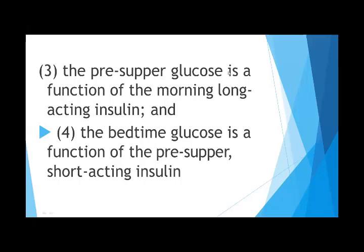Pre-supper glucose is a function of the morning long-acting insulin. We check the insulin before dinner; if it is high, the next morning the NPH dose is increased. Bedtime glucose is a function of the pre-dinner short-acting Regular insulin and is adjusted accordingly.